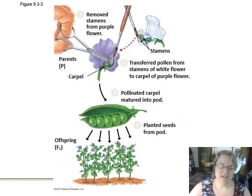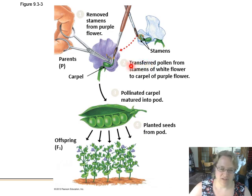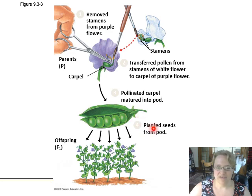How exactly did Mendel do these crosses? He would remove the male parts from the mother plant and then hand pollinate — using a little brush to pick up pollen from the male parent and place it on the carpel of the flower — preventing self-fertilization and getting the cross he wanted. The carpel would mature into a pod, and he would save and plant those seeds to have the offspring from that original cross.